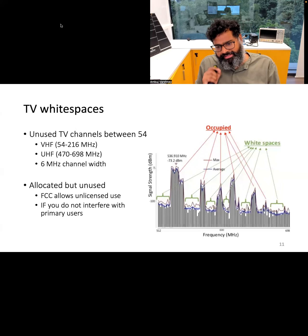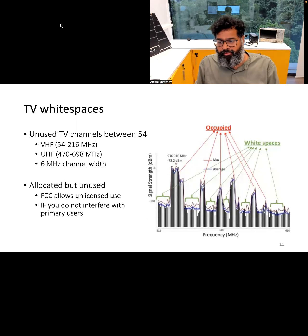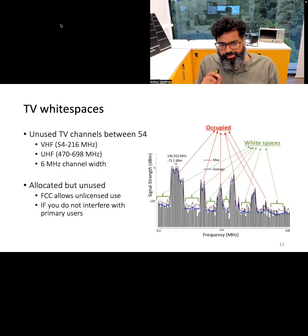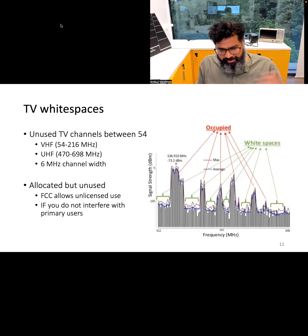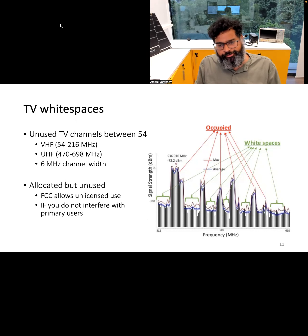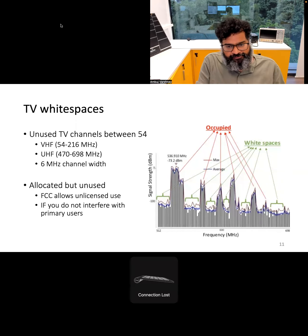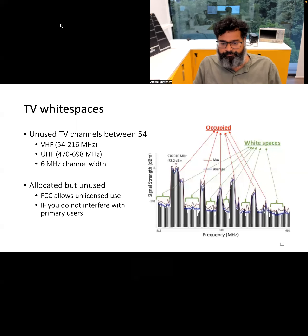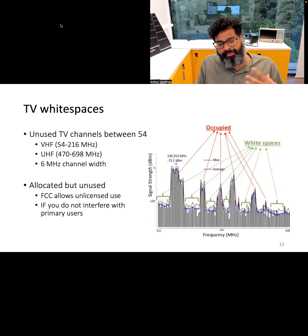In some parts of the world, you are allowed to use these frequency bands with the condition that you don't interfere with the primary usage of the spectrum, which is to transmit television signals. As long as you don't cause interference to television receptions, you are allowed to use the TV white space band. This is controlled by an authority such as the FCC in the United States, though it varies by country and some countries may not allow use of these bands for IoT devices.